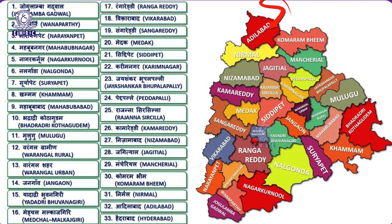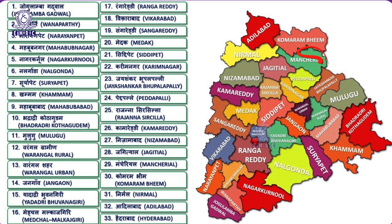A district is an administrative division of an Indian state or territory. States and territories are subdivided into districts, which are headed by a district collector. Telangana state has 33 districts namely Adilabad, Kumram Bheem, Mancherial, Nirmal, Nizamabad, Kamareddy, Karimnagar, Rajanna Sircilla, Jagithyal, Pedapalli, Jayashankar Bhupalpalli, Warangal Rural, Jangaon,